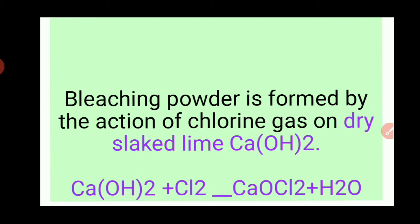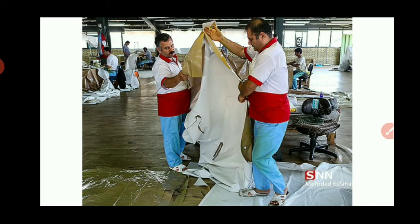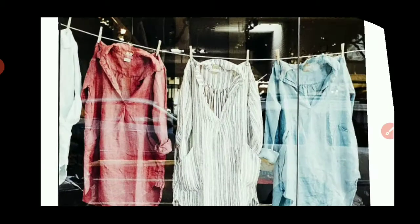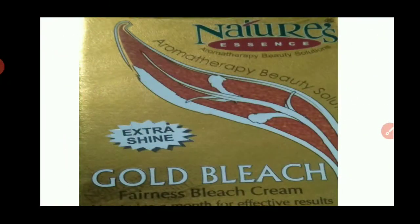In this reaction, some water molecules are released. What are the uses of bleaching powder? Bleaching powder is very useful in some areas. For example, it is useful in textile industries and for bleaching washcloths.